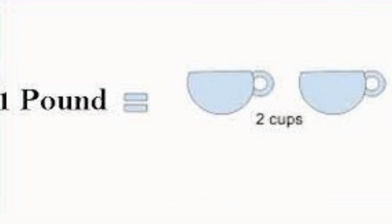So we come to the key equivalence: 16 ounces equals one pound, or two cups. Another way to look at it is that one cup weighs eight ounces, and therefore two cups equals 16 ounces — the same weight as one pound.